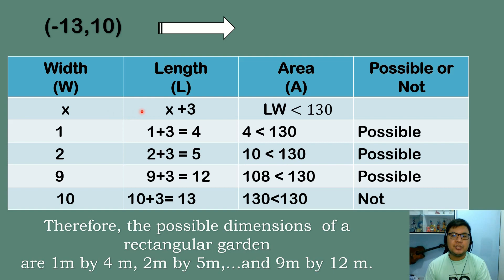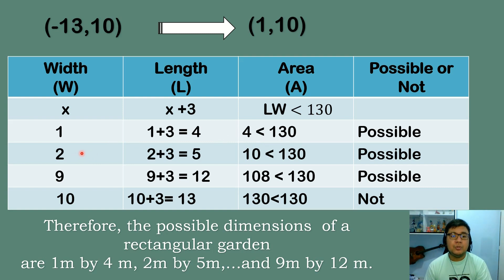Since we are dealing with dimensions of a rectangle, negative numbers are not valid. So values from negative 12 through negative 1 are eliminated, and zero is also eliminated since width cannot be zero. Starting from positive 1: width equals 1, length equals 1 plus 3 equals 4, area equals 4 — less than 130, valid. Continuing: width 2, length 5; width 9, length 12, area equals 108 — less than 130, still valid.